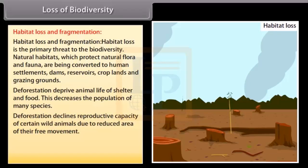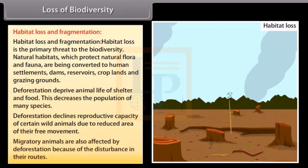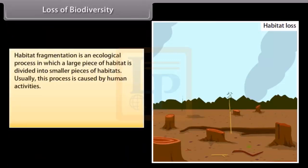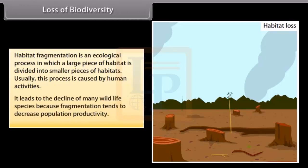Deforestation deprive animal life of shelter and food. This decreases the population of many species. Deforestation declines reproductive capacity of certain wild animals due to reduced area of their free movement. Migratory animals are also affected by deforestation because of the disturbance in their routes. Habitat fragmentation is an ecological process in which a large piece of habitat is divided into smaller pieces of habitats. Usually, this process is caused by human activities. It leads to decline of many wildlife species because fragmentation tends to decrease population productivity.